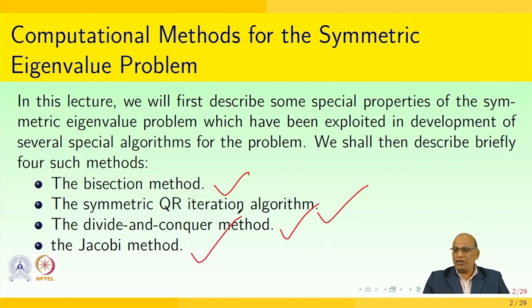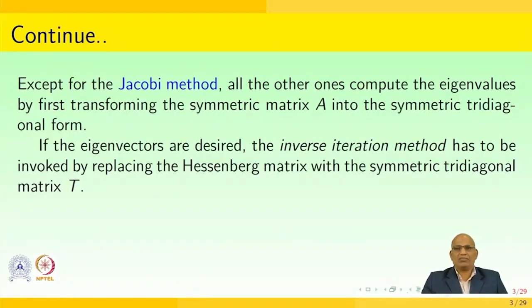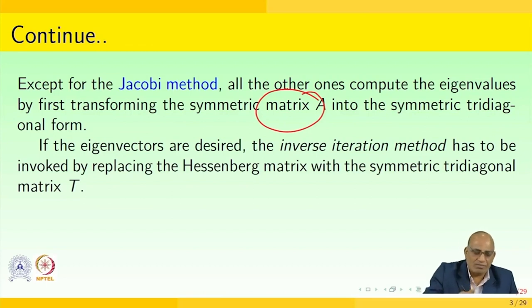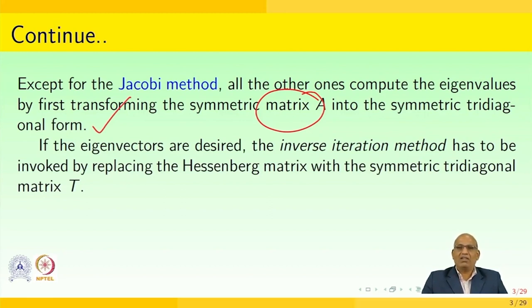Let us look into each method separately. Except for the Jacobi method, all the other ones compute the eigenvalues by first transforming the symmetric matrix A into the symmetric tri-diagonal form. If the eigenvectors are desired, the inverse iteration method has to be invoked by replacing the Hessenberg matrix with the symmetric tri-diagonal matrix T.